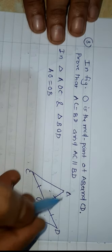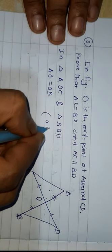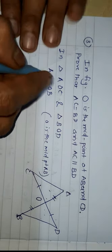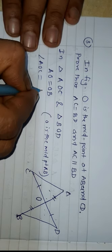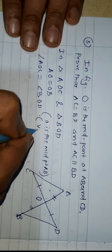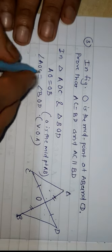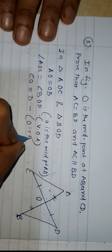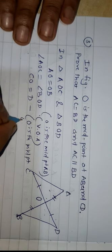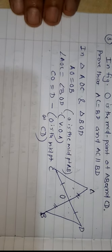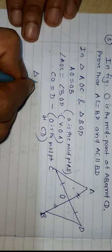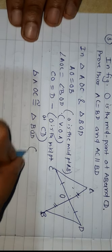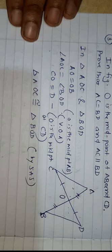AO is equal to OB — because O is the midpoint of AB. Angle AOC is equal to angle BOD — vertically opposite angles. CO is equal to DO — O is the midpoint of CD. So triangle AOC is congruent to triangle BOD by SAS, side-angle-side.